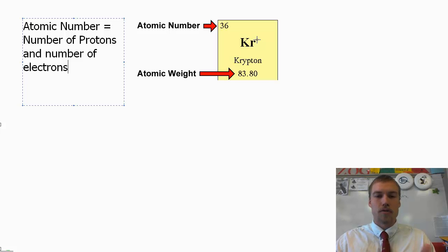So for example, krypton has 36, hydrogen has 1, helium has 2, so on and so forth. So that's how we determine how many protons each atom has, or where they go on the periodic table is by the number of protons.